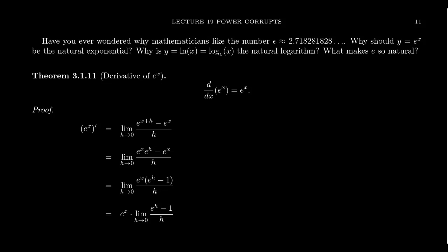Have you ever wondered why mathematicians like the number e, which is approximately 2.718281828? It's an irrational number. What's the big deal?